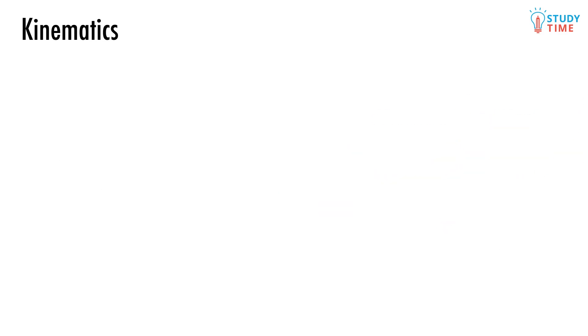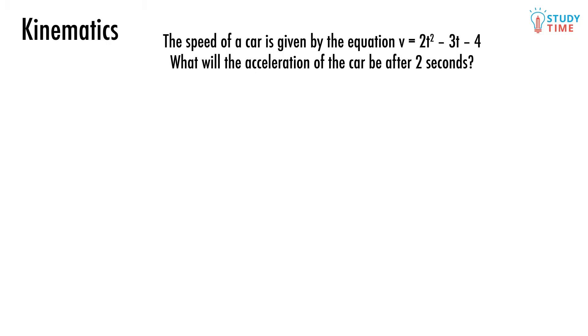So let's look at the kind of question that we're talking about here. Let's say you get told that the speed of a car is given by the equation v equals 2t squared minus 3t minus 4. And the problem you get given is, what will the acceleration of the car be after 2 seconds? The first thing you need to realize is that t is simply measuring time in seconds. Now we've already been given a speed equation, and so in order to turn that into an acceleration equation, we simply need to differentiate.